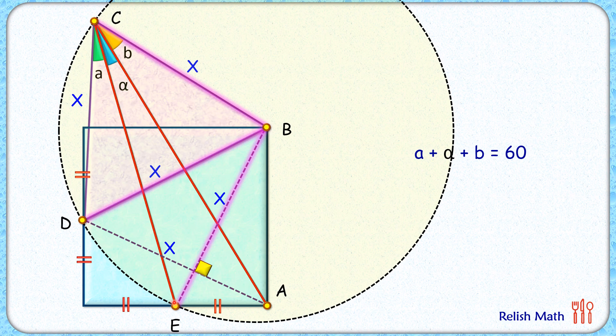Now in this yellow circle, de is a chord. This de chord is sustaining an angle of a degree at the circumference. By theorem, at the center it will sustain twice this angle, and thus this chord de will sustain an angle of 2a degrees at point b.